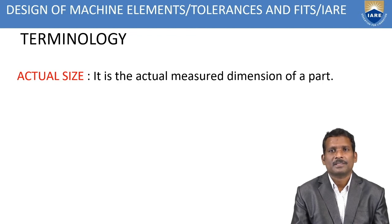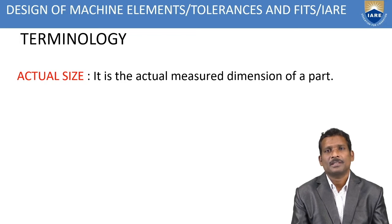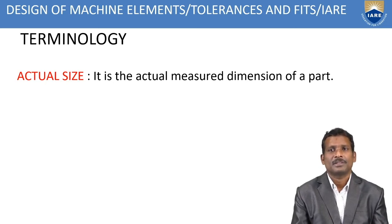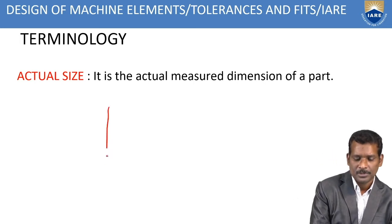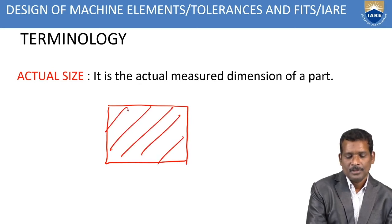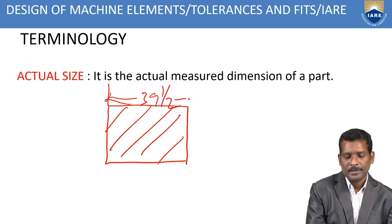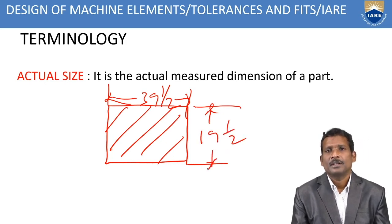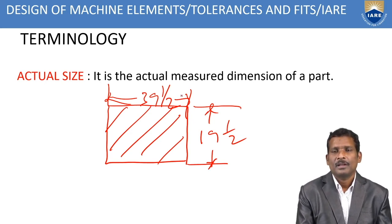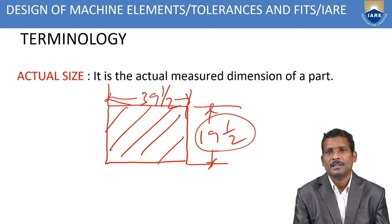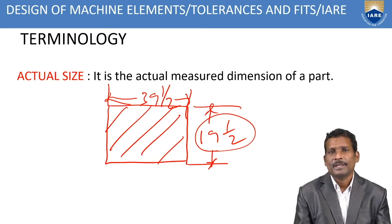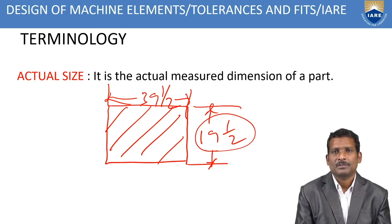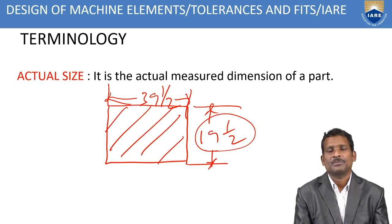The actual size is the actual measured dimension of a part. The nominal size is already specified in the drawing, but in actual condition after manufacturing it may be different — that is called the actual size. For example, if the nominal size is 40 mm and 20 mm, after manufacturing the actual size may be 39.5 mm and 19.5 mm. The difference between the actual size and nominal size is due to manufacturing errors.